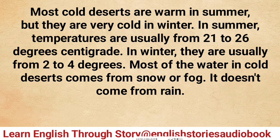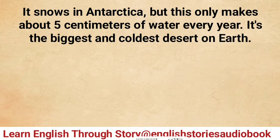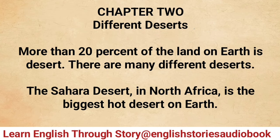In winter, cold deserts are usually from two to four degrees. Most of the water in cold deserts comes from snow or fog — it doesn't come from rain. It snows in Antarctica, but this only makes about five centimeters of water every year. It's the biggest and coldest desert on Earth.